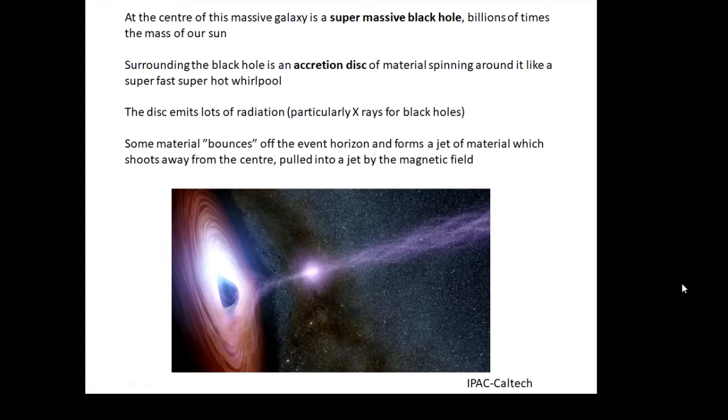That's the accretion disk. When material whizzes around like that it gives off lots of radiation, particularly X-rays for black holes. There are different types of accretion disks. The hotter it is, the more higher wavelength radiation it gives out. The accretion disk around a protostar gives off infrared.